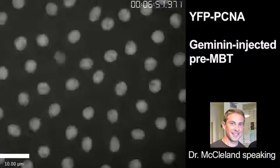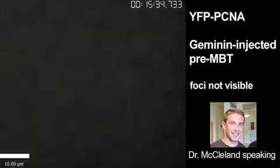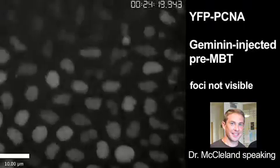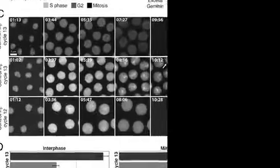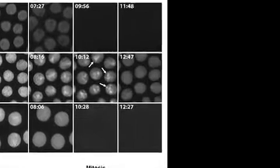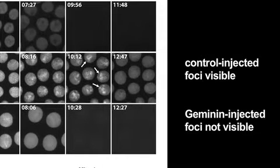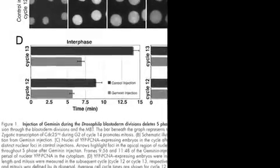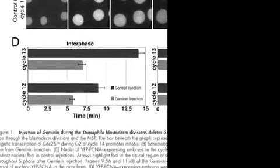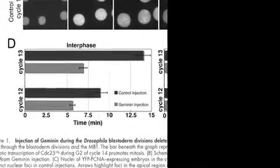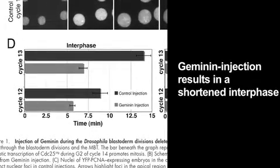What we basically did was to look to see whether geminin injection was truly inhibiting DNA replication. So when we injected geminin, essentially what we saw was that during interphase, these replication foci were no longer present. And this indicated to us that replication was indeed blocked after geminin. The group analyzed YFP-PCNA to determine the effect on interphase length, and they found that when they deleted S-phase, interphase was shorter.